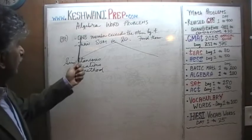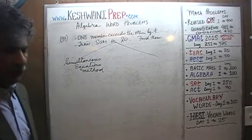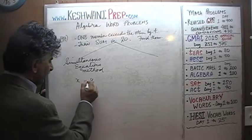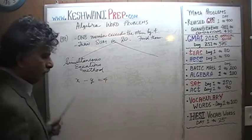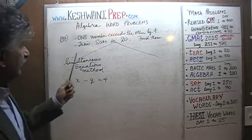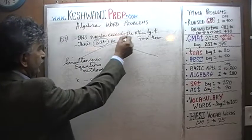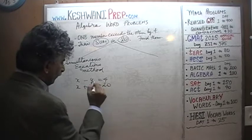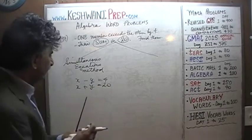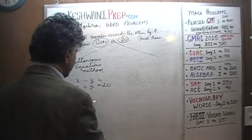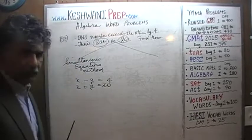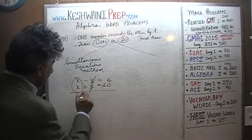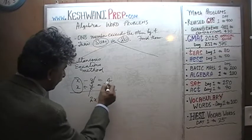We are told that one number exceeds the other by 4, so let's call these two numbers x and y. One exceeds the other by 4, so x minus y equals 4. We also know that their sum is 20, so x plus y equals 20. Let's line up the equations and add them up. The y's drop out and we end up with 2x equals 24.